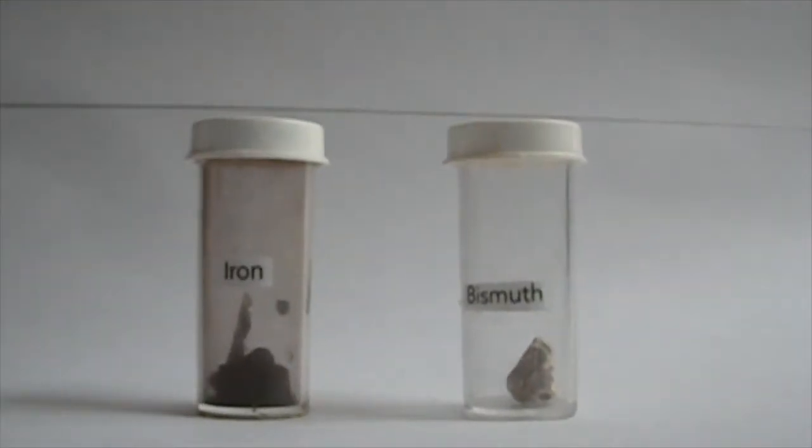Okay, now paramagnetism. The most paramagnetic substance that I know of is aluminum. It's attractive to a magnet, but it can't be magnetized. Iron, on the other hand, can be magnetized because it's ferromagnetic.